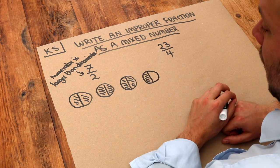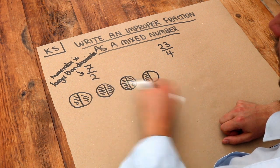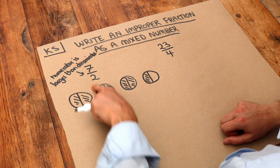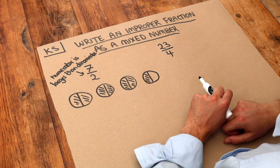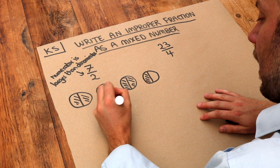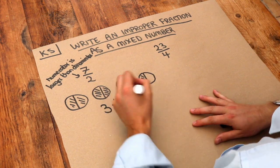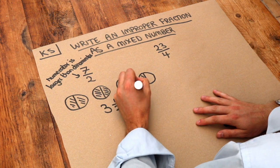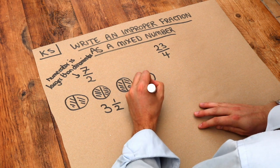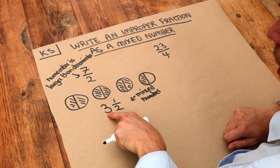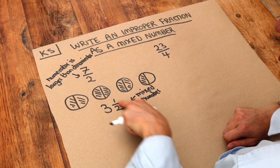What's another way of describing how many pizzas we have? We've got three full pizzas and a half pizza, so we could write this as 3½. This is known as a mixed number because we've got a mixture of a whole number and a fraction.